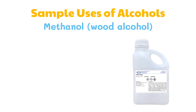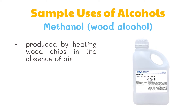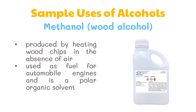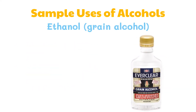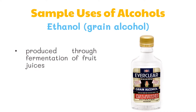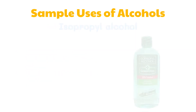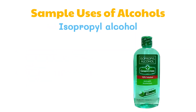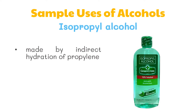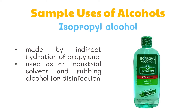Methanol is produced by heating wood chips in the absence of air. It is used as fuel for automobile engines and is a polar organic solvent. Ethanol is produced through fermentation of fruit juices. It is used as motor fuel or gasoline. Isopropyl alcohol is made by indirect hydration of propylene. It is used as an industrial solvent and rubbing alcohol for disinfection.